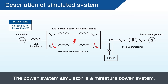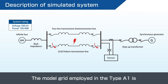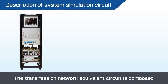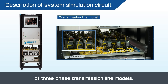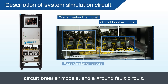The Power System Simulator is a miniature power system where actual electricity is supplied. The model grid employed in the Type A1 is the Single Machine Infinite Bus Power System. The Transmission Network Equivalent Circuit is composed of three-phase transmission line models, circuit breaker models, and a ground fault circuit.